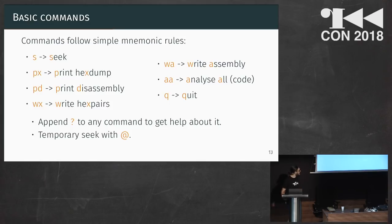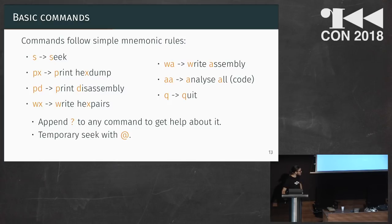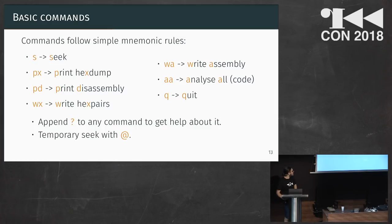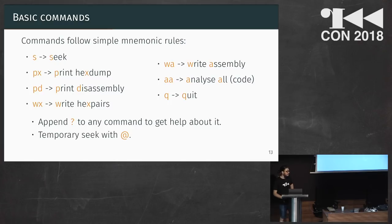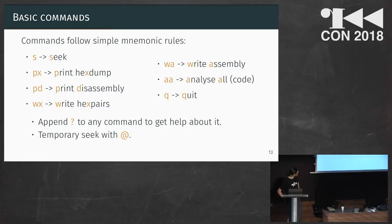This is probably the most important slide. Radare commands follow simple mnemonic rules, so everything is intuitive. You have s to seek to an address, px for print hex dump, pd for print disassembly, wx to write hex pairs, wa to write assembly, aa to analyze all code. You can throw a bunch of a's, but sometimes it's not strictly necessary and you'll save a lot of time by going just to what you need. And then q to quit. The most important thing in Radare is: append a question mark to any command to get help about it.